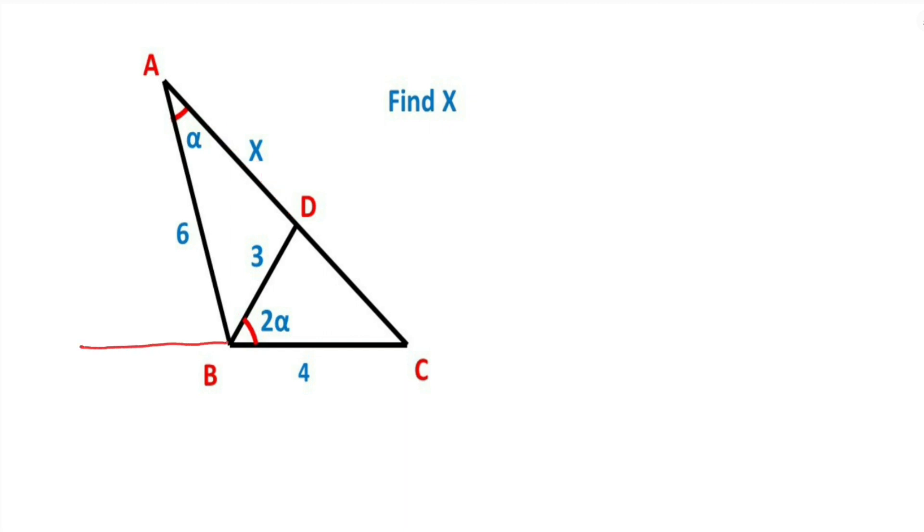First, if we extend corner B as long as the length of BD like this, we get this triangle. Let's call here K point.